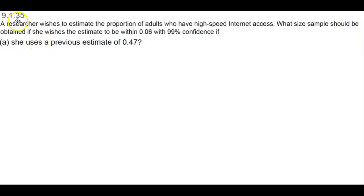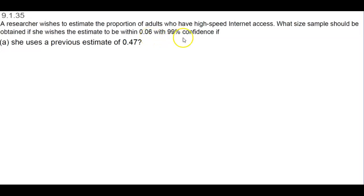Section 9.1.35. A researcher wishes to estimate the proportion of adults who have high-speed internet access. What size sample should be obtained if she wishes the estimate to be within 0.06 with 99% confidence, if she uses a previous estimate of 0.47?